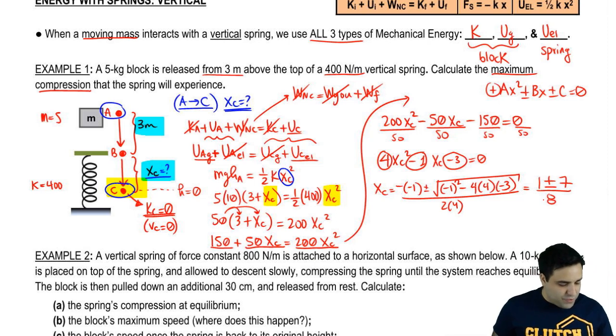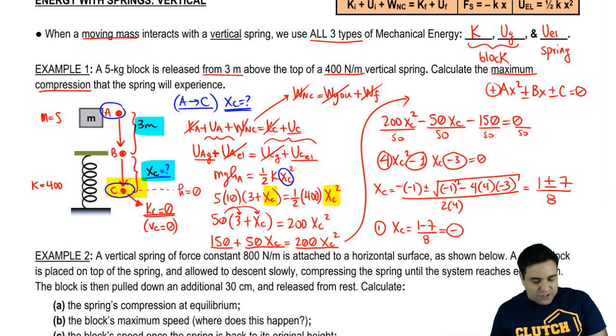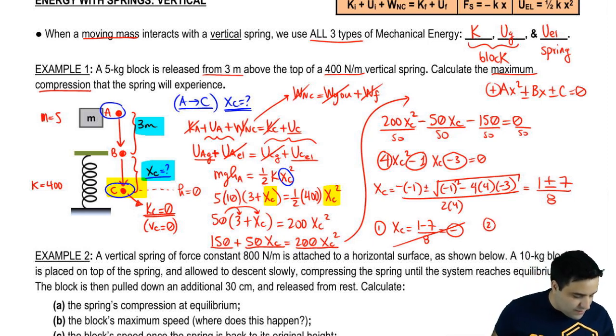The plus or minus means we're going to do this twice. The first version is xc equals 1 minus 7 over 8. This is going to give you a negative number. And a negative compression makes no sense. So remember, usually in physics, when you do the quadratic equation, you end up with one of the numbers being tossed out, one of the answers being tossed out, the negative one. So the other one is going to be positive, 1 plus 7 over 8, that's 8 over 8, and it's 1 meter. And that's the final answer.